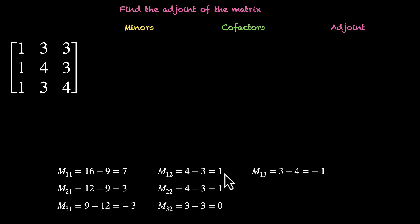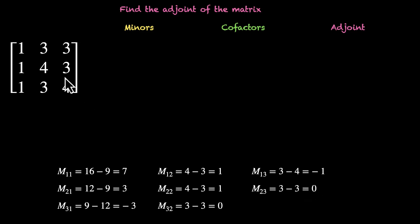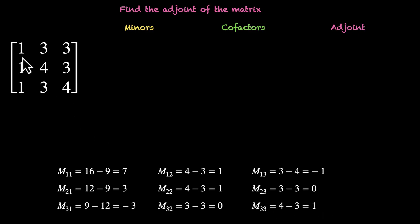M13 on the top right is going to be 3 minus 4, that's minus 1. Then M23 will be 3 minus 3, that's 0. And on the bottom right, M33 is 4 minus 3, that's 1. So these are our minors.